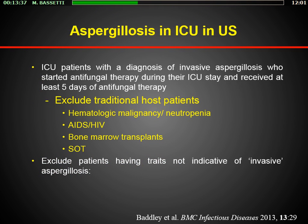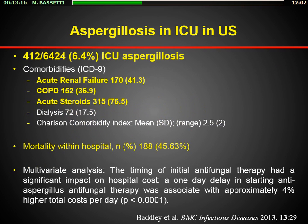More recently, interesting data from the United States analyzed ICU patients with a diagnosis of invasive aspergillosis who received antifungal treatment, excluding traditional host patients: hematological patients, HIV, and bone marrow transplant. The number of patients with aspergillosis in the ICU was quite high — 6.4%, very similar to the Belgian data. The majority reported steroid use — 76% — with around 35% having COPD and 41% with acute renal failure.